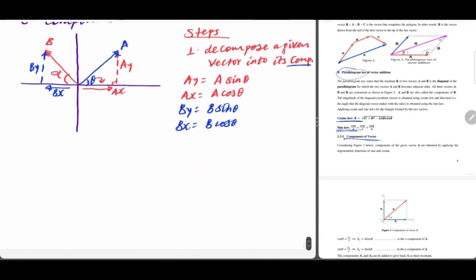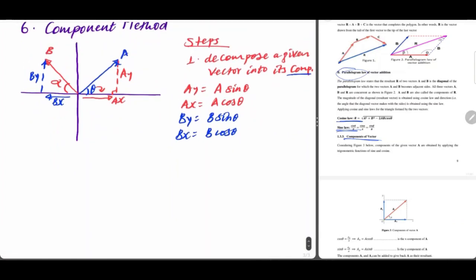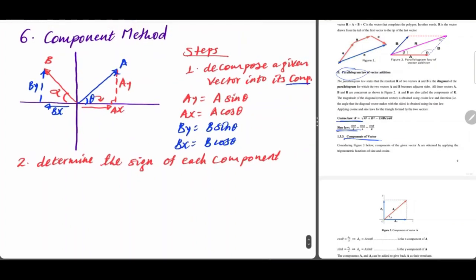The second step is to determine the sign of each component. We are going to determine the sign of each component: A_y, A_x, B_y, B_x. It can be positive or negative, and we determine the sign accordingly.